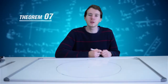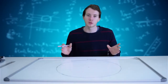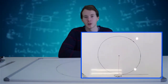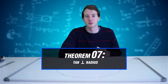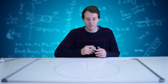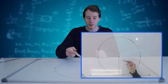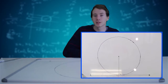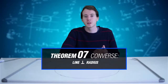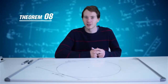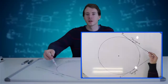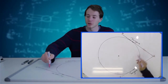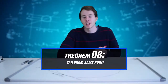Theorem 7 states that if a tangent to a circle is drawn, then that tangent will be perpendicular to the radius at the point of contact. The reason is: tangent perpendicular to radius. Theorem 7's converse states that if I take a line and draw it perpendicular to the radius at the point where the radius meets the circle, then that line AB is going to be a tangent. The reason is: line perpendicular to radius. Theorem 8 states that if we have two tangents drawn from the same point outside of the circle, then these two tangents will be equal in length. The reason is: tangents from the same point.